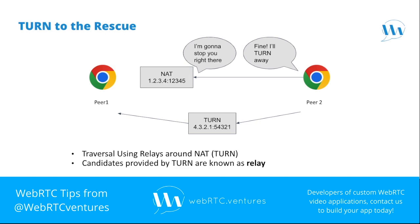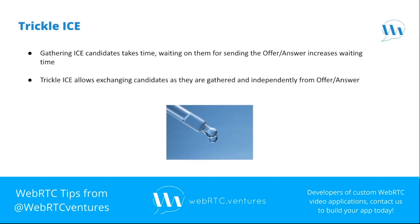In such an arrangement, the TURN server will relay the media traffic from one peer to the other if a direct connection is not possible. As you can probably tell, the process for gathering ICE candidates takes some time, and only one of these will end up being used, so in some cases waiting for all of them before sending the offers and answers might not be worth it.